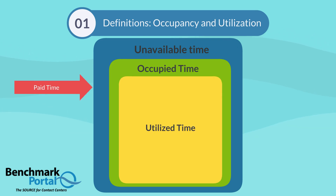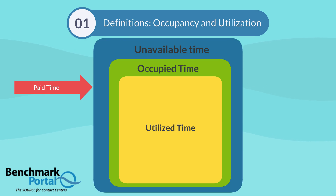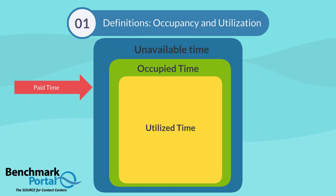Since these are the two metrics that cause the most confusion, let's review with a couple more slides. One could argue that you want to know how much client-facing utilization you got for the overall money you paid for agents — that is, the inner utilized time box as a percentage of the outer paid time box — and there is a certain logic here. However, the industry has coalesced around the definition of utilization as a percent of occupied time, precisely because it does highlight the effectiveness of the workforce management function in filling up available time. It is workforce management's ability to utilize occupied time that indicates how well they do their jobs of forecasting and scheduling.